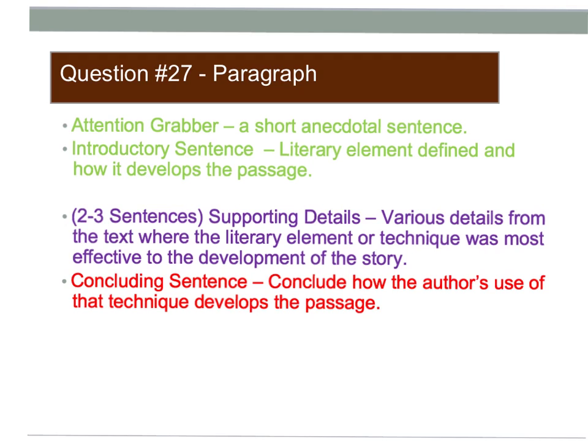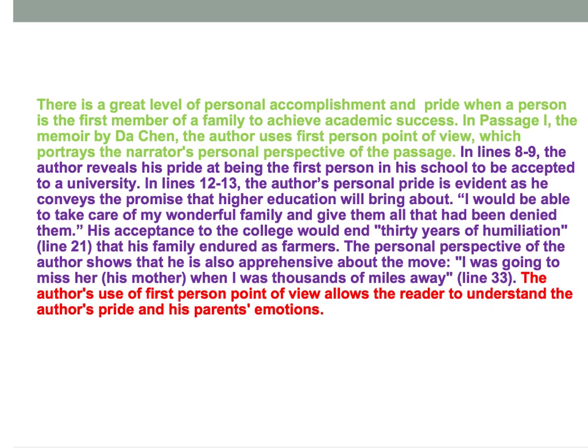The final element is the concluding sentence, and it's also an important sentence. You need to conclude how the author's use of the technique you mentioned really developed the passage — why it really helped the passage make more sense to you. Here is the conclusion: 'The author's use of first-person point of view allows the reader to understand the author's pride and his parents' emotions.' Notice that I have mentioned the literary element again, included a sense of the definition, and brought in the theme of the author's pride. The last sentence really concludes all these elements in one sentence.